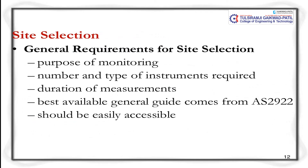For site selection in air sampling, the following are important: we must be clear about the purpose of monitoring; we need a database of the number and type of instruments required and their costs; we must know the duration of measurement; and we should follow the best available general guidelines from AS 2922, ensuring the monitoring equipment is easily accessible.